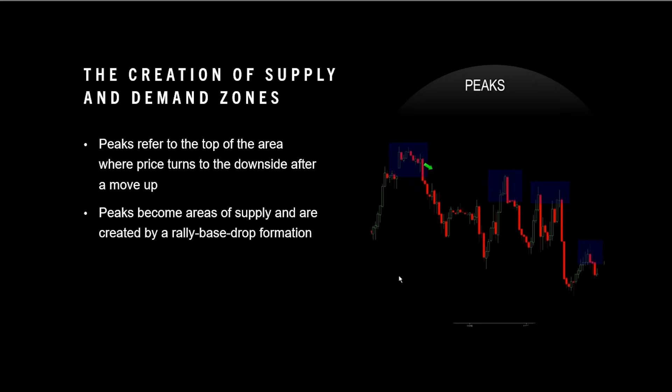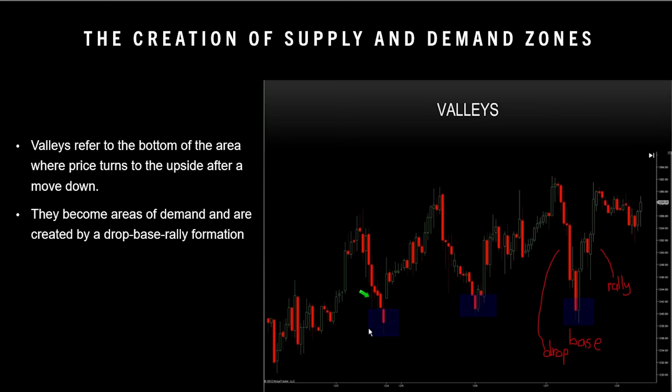What are these zones created from? Peaks and valleys, which are just another name for market turning points. Peaks refer to the top of the area where price turns to the downside after a move up. They become areas of supply and are created by a rally-base-drop formation. A rally goes up, a base is the consolidation where it just hangs out for a bit, and the drop is, well, the drop. It would be easier to just call them up-sideways-downs. Valleys refer to the bottom of the area where price turns to the upside after a move down. They become areas of demand and are created by a drop-base-rally formation — that just means down-sideways-up.